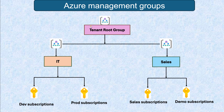This is a top-level management group called the Tenant Root Group. Whenever you activate the management group service in your Azure portal, it will by default create this Tenant Root Group. Under it, you create child management groups. In this diagram, I have created two management groups: IT Department and Sales Department. Under IT, I have two subscriptions called Dev and Prod, and similarly for Sales, I have Sales and Demo subscriptions.